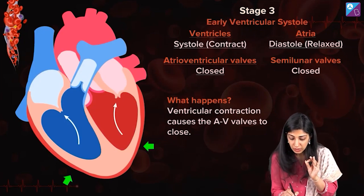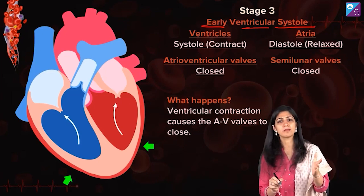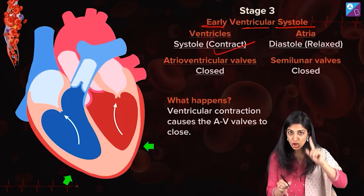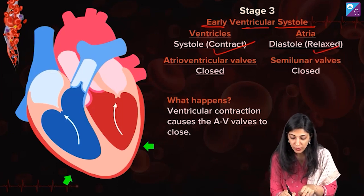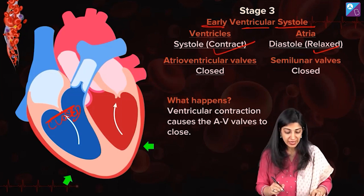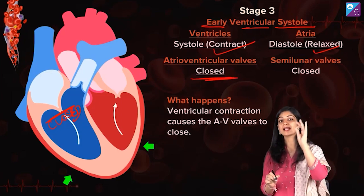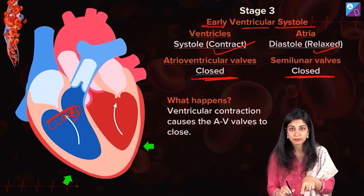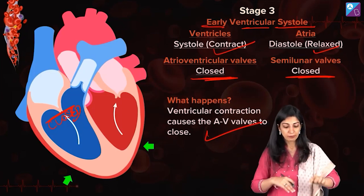Stage 3: Early ventricular systole. Ventricles are going to contract, and because it is a rhythm, now the atria are relaxed. When the ventricles contract, AV valves have to be closed — because I don't want blood to flow back into the atria. So AV valves are going to be closed. Semilunar valves are also closed in early ventricular systole. Only the AV valves, very very important, have to shut down in early VS.